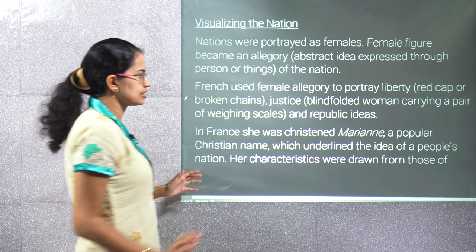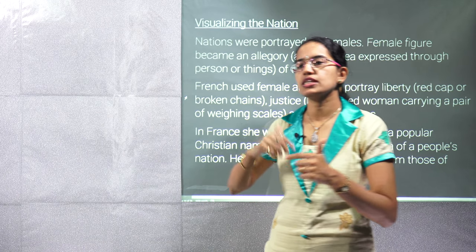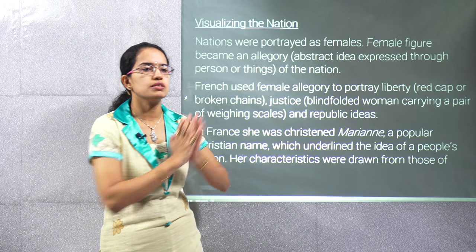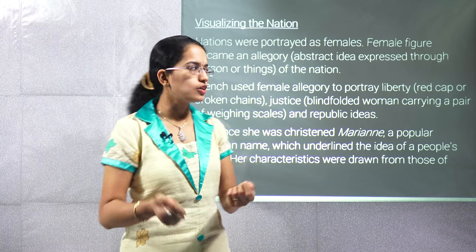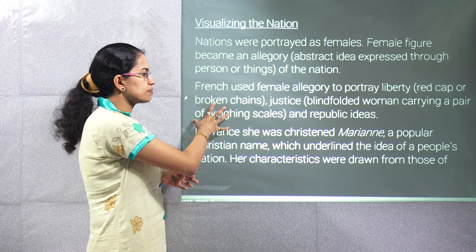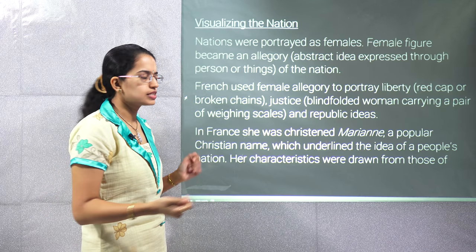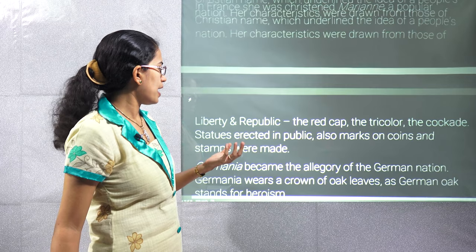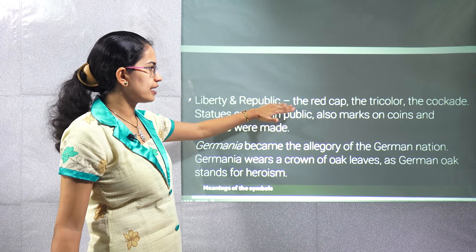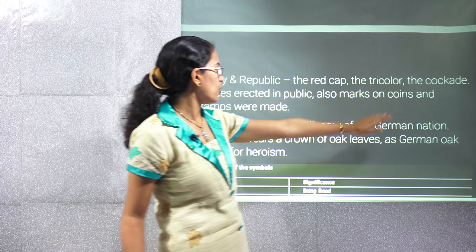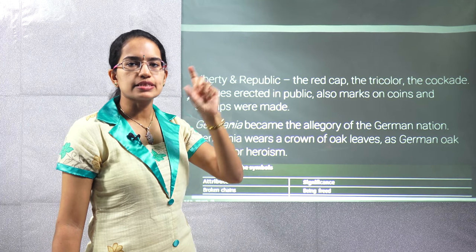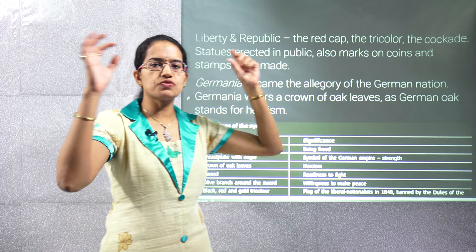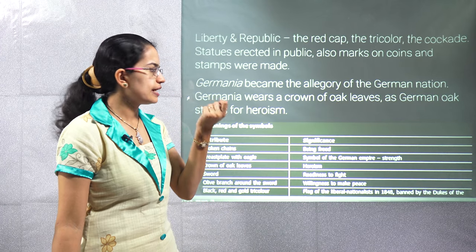When we try to visualise nations, it is done through a kind of figure. Just as we will see in chapter 3 with Bharat Mata for India, here we have female figures or allegories — abstract ideas representing the nation through a person. In France you had Marianne, characterised by the ideas of liberty and republic, wearing a red cap, tricolour and cockade. Her statues were erected in public places and seen on coins. In Germany you had Germania, wearing a crown of oak leaves, which dealt with heroism. The various symbols and their significance have been given.